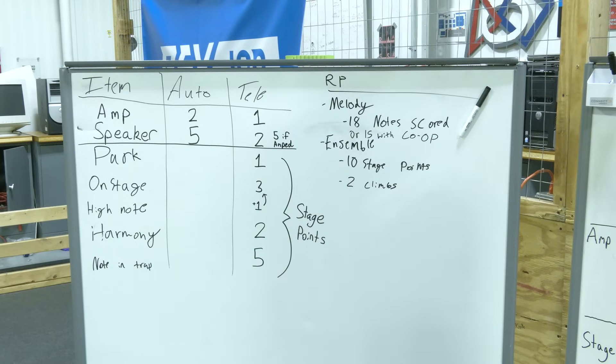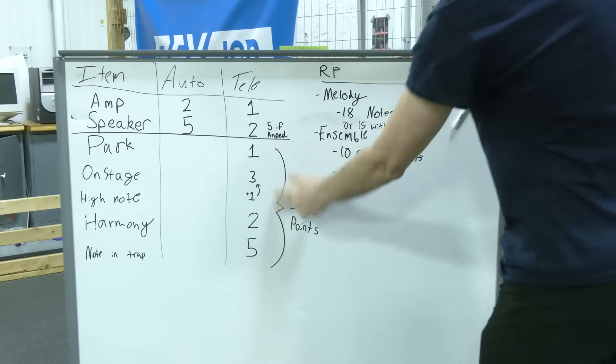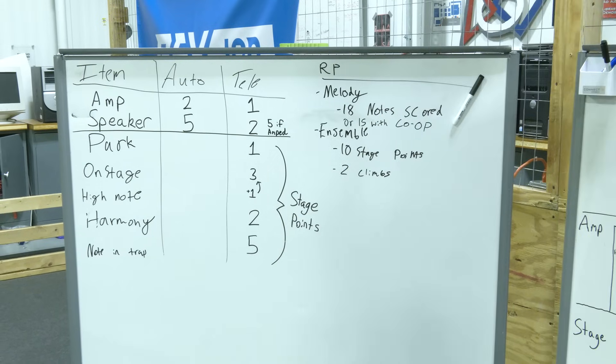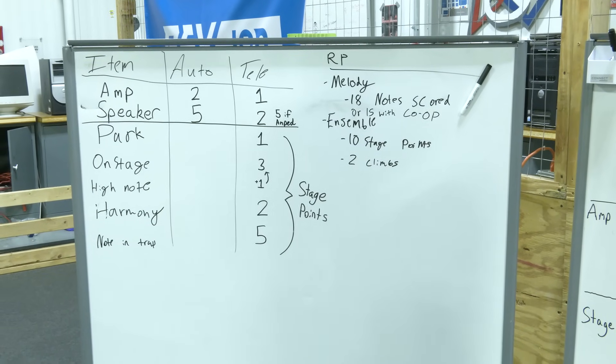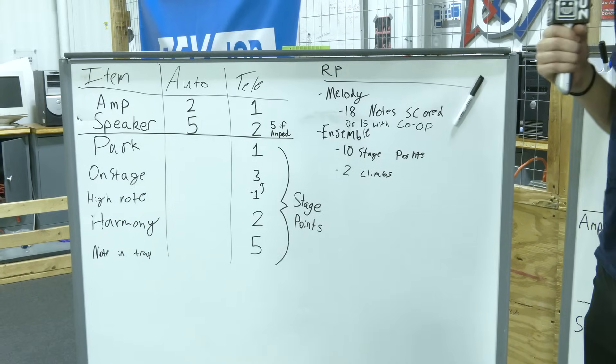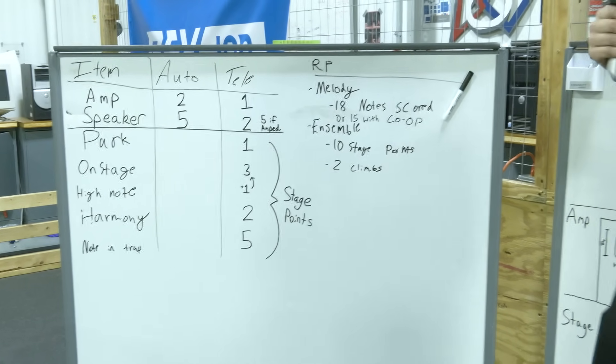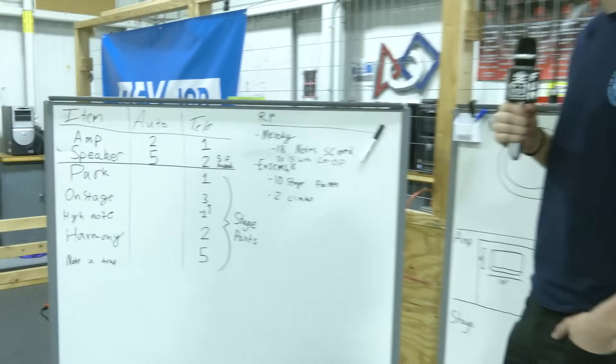And then on the ensemble, you need to score 10 stage points. That could be any combination of here. There's actually a lot of combinations that can actually get you that 10 stage points. You can do it with three robots, you can do it with two robots. The minimum has to be two robots climbing. There's a lot of ways that you can really do it.